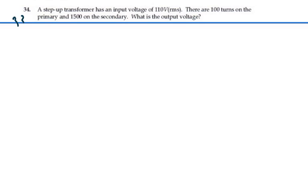Here's problem 3334. A step-up transformer has an input voltage of 110 volts RMS. There are 110 turns on the primary and 1,500 on the secondary. What is the output voltage?